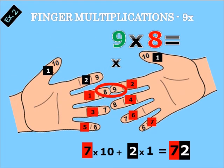For nine times eight, put nine and eight together. You count all of them down — seven. Seven times ten is seventy, and two times one is two, so you have seventy-two. Nine times eight equals seventy-two.